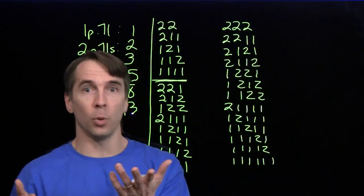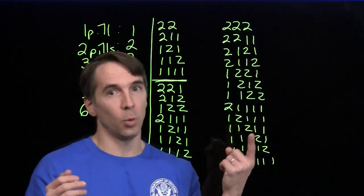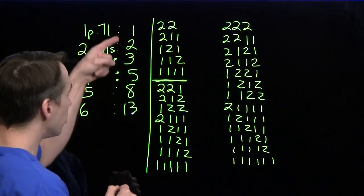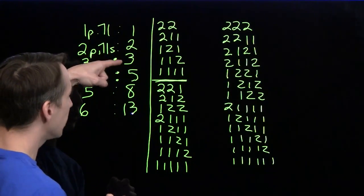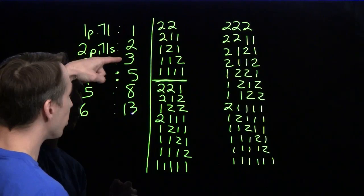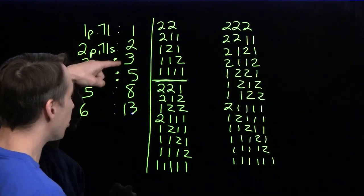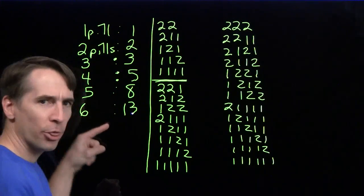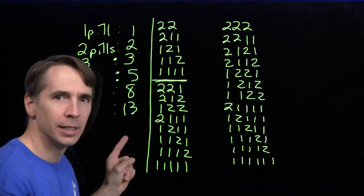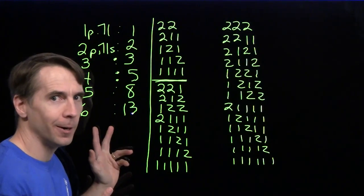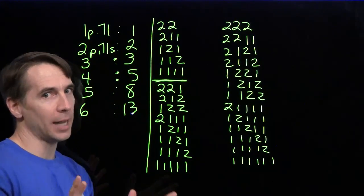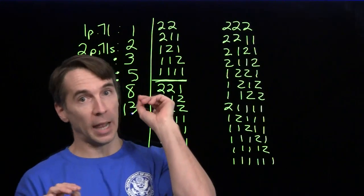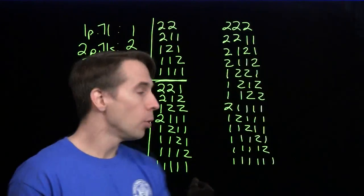Fibonacci numbers: you start off with zero and one, add those to get one; add one and one to get two; add one and two to get three; add two and three to get five; add three and five to get eight; add five and eight to get thirteen. What's going on here? This looks like magic. We have a special word for this magic in counting — we call this recursion. We relate each case to the cases before it.